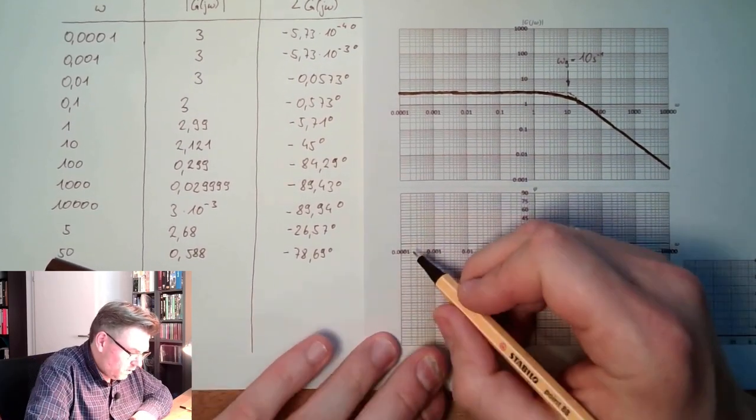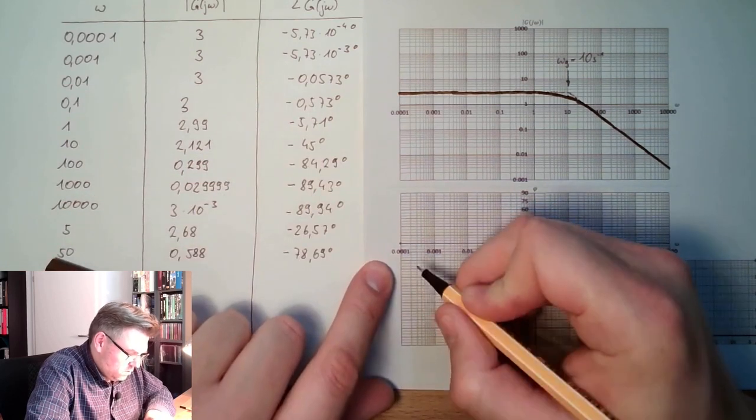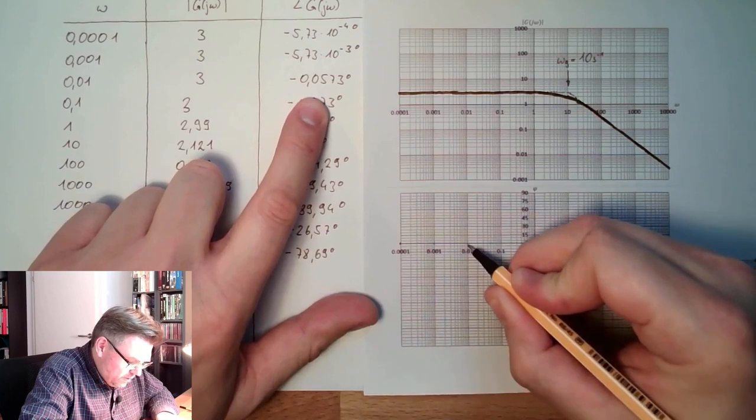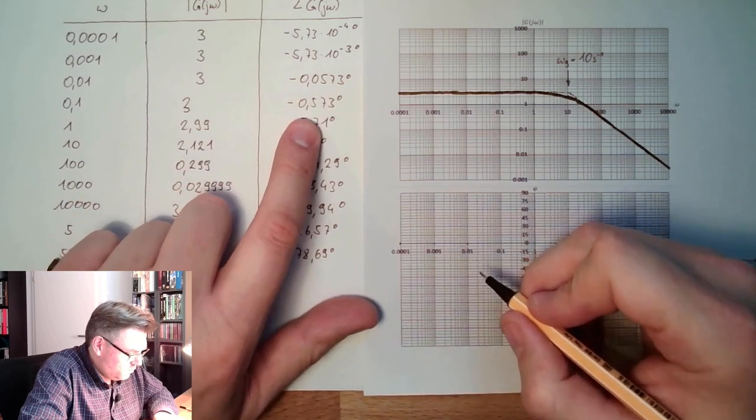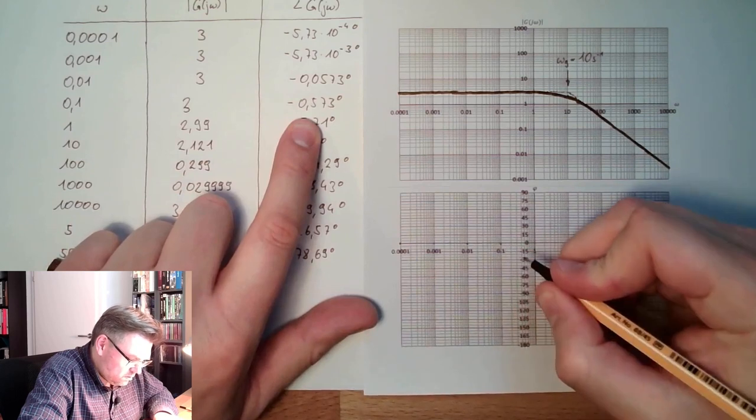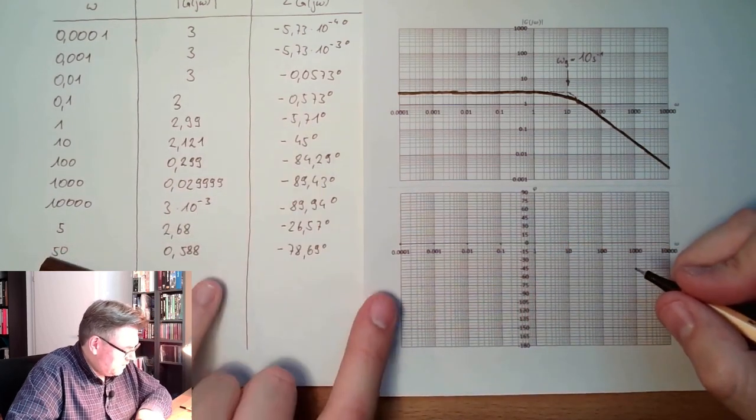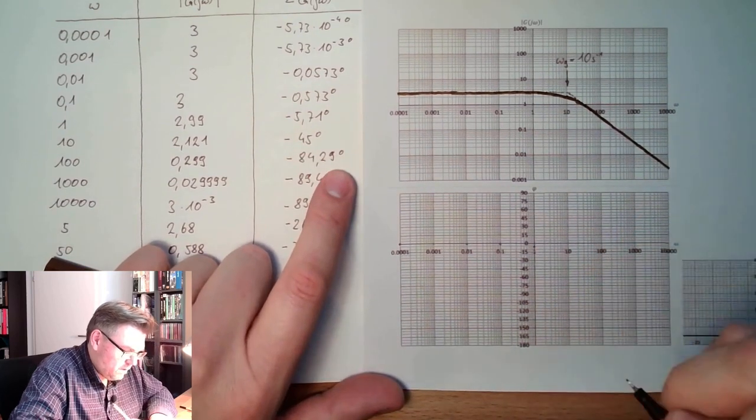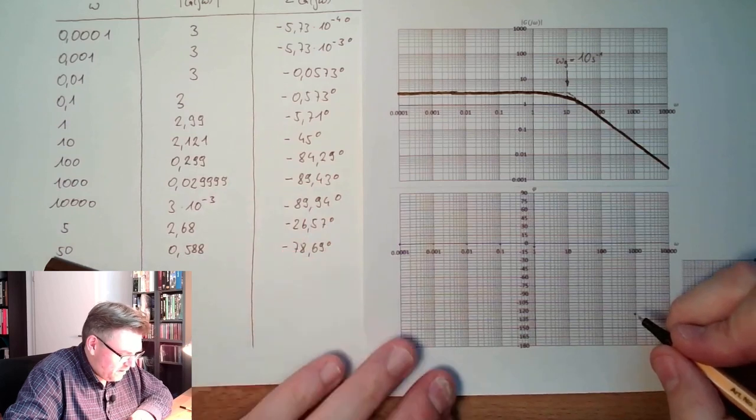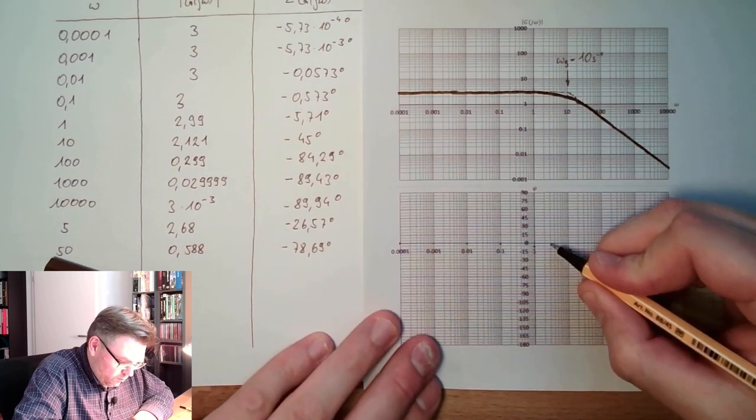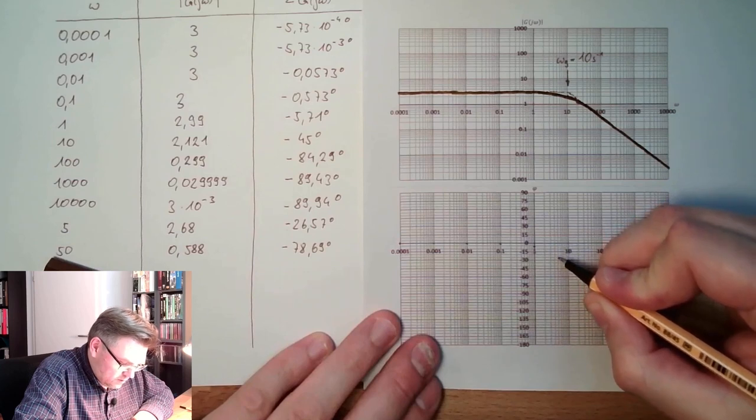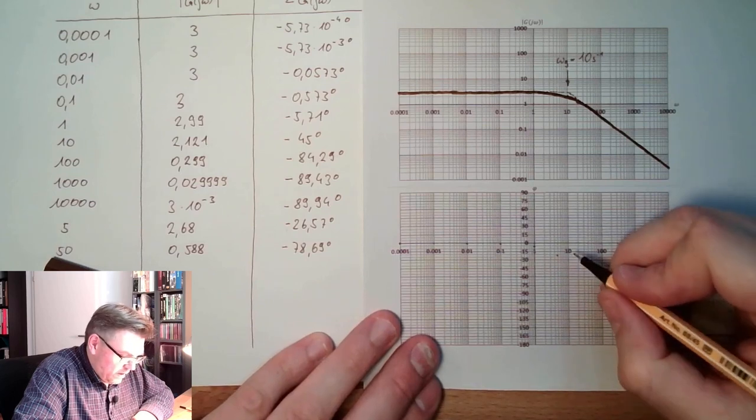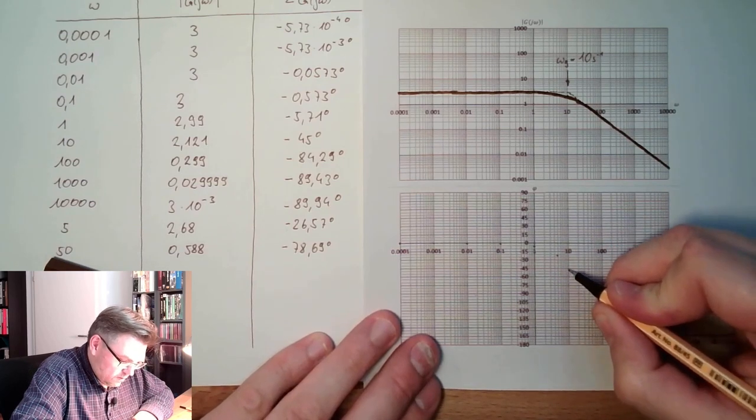Let's draw the argument. At 0.01, I'm at minus 0. 0.001, also minus 0. 0.1, a half degree, also a little bit. At 1, minus 5, here we have already something, we're here. At 5, we're at minus 26, so we are somewhere here. At 10, I'm at minus 45, we're here.